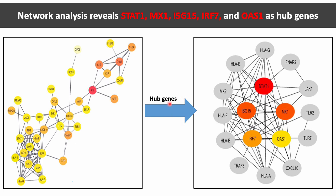Therefore, the protein-protein interaction network analyses identify the following hub genes: STAT1, MX1, ISG15, IRF7, and OAS1.